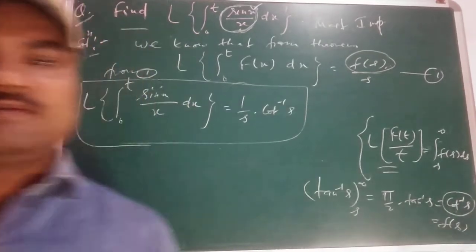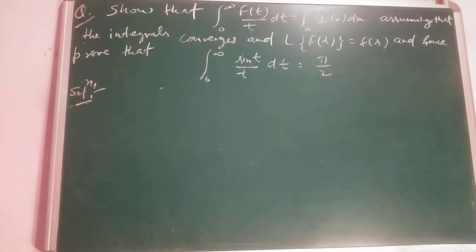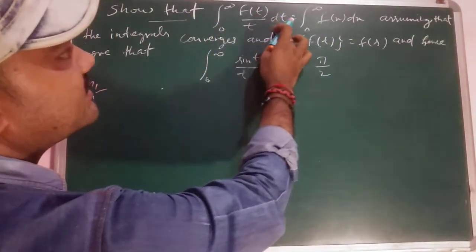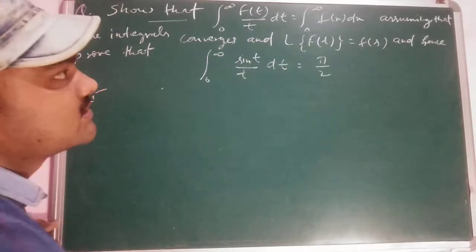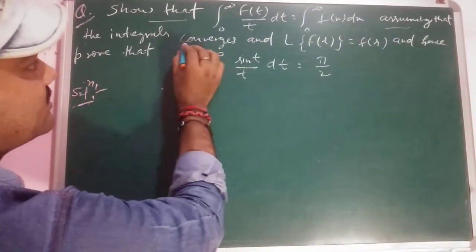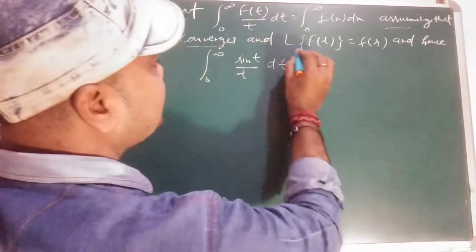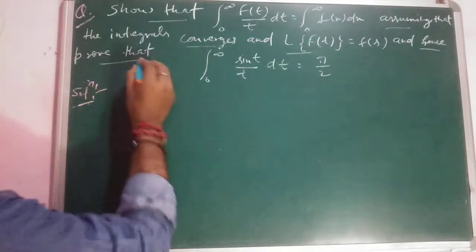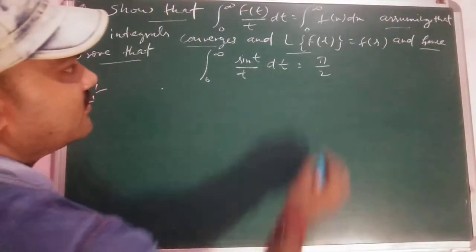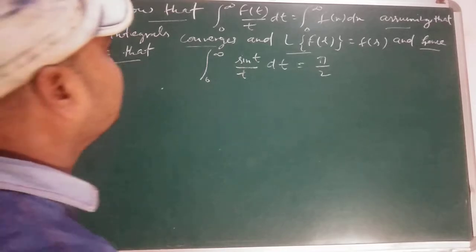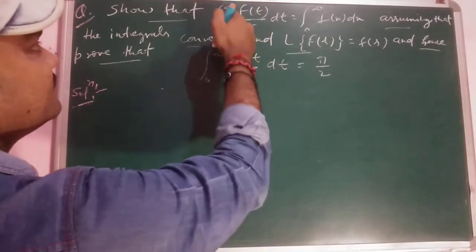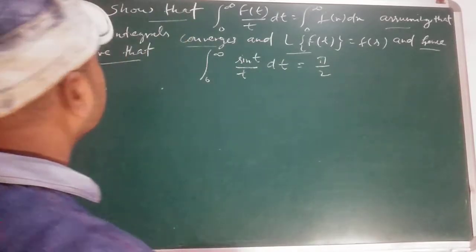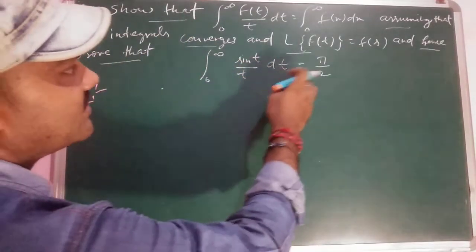Now let's see some more questions. The question is: show that ∫₀^∞ f(t)/t dt = ∫₀^∞ F(x) dx, assuming the integrals converge and L{f(t)} = F(s). And hence prove that ∫₀^∞ (sin t / t) dt = π/2. There are two parts: first show the equality, then prove the π/2 result.